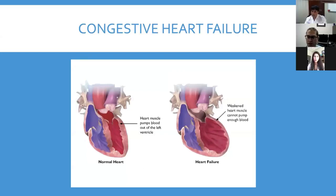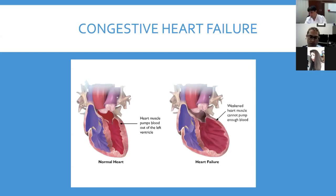Another major cardiovascular complication of diabetes is congestive heart failure. This can happen even if the blood flow to the heart muscles is normal. If you have uncontrolled blood sugar for many years, it can start to affect how the muscles in your heart walls squeeze. You can have a problem where the chambers become weak and dilate — one form of congestive heart failure — or the heart doesn't relax normally to let blood fill it, which is a different type of heart failure. Both are more common in patients with diabetes.